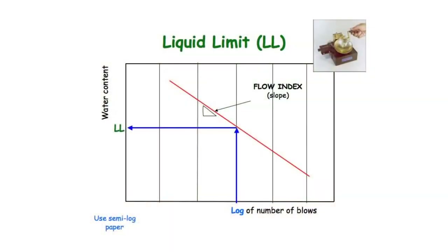Plot the moisture content versus blow counts to determine the liquid limit from the flow curve. With moisture content on the vertical axis and blow counts on the horizontal axis in log scale, a linear regression can be established through the data and the liquid limit can be interpolated.